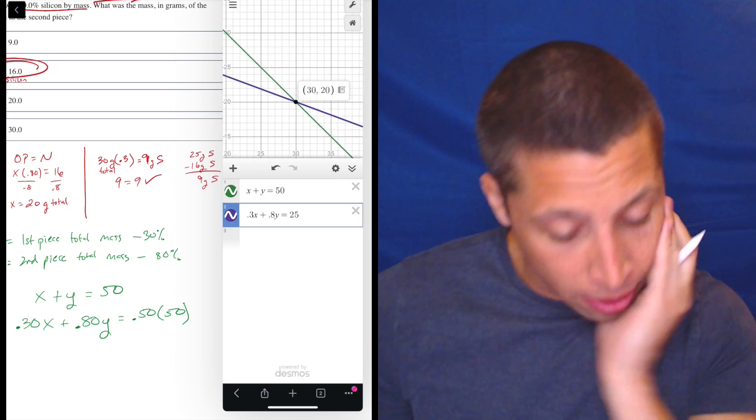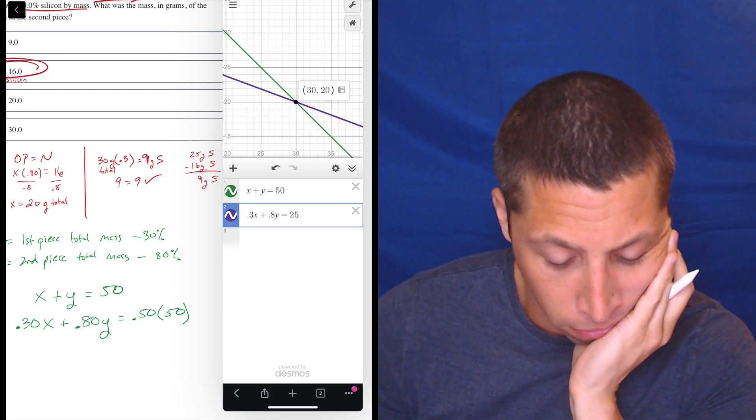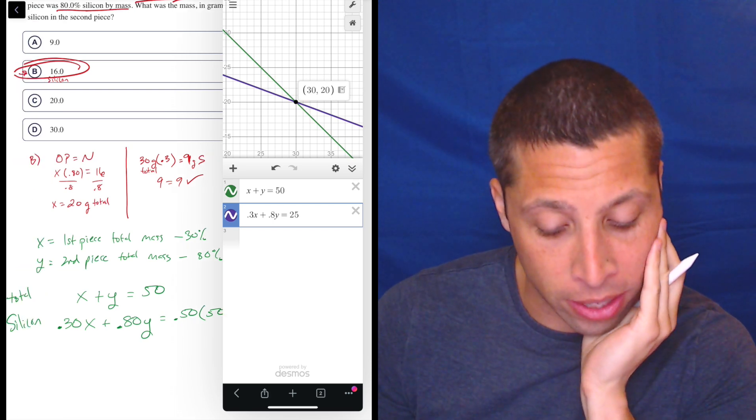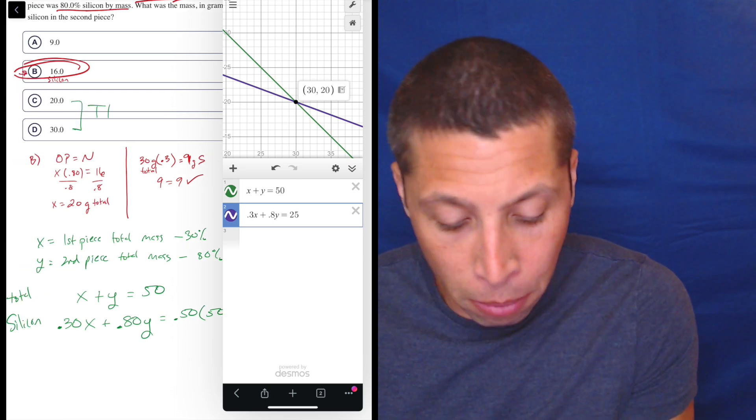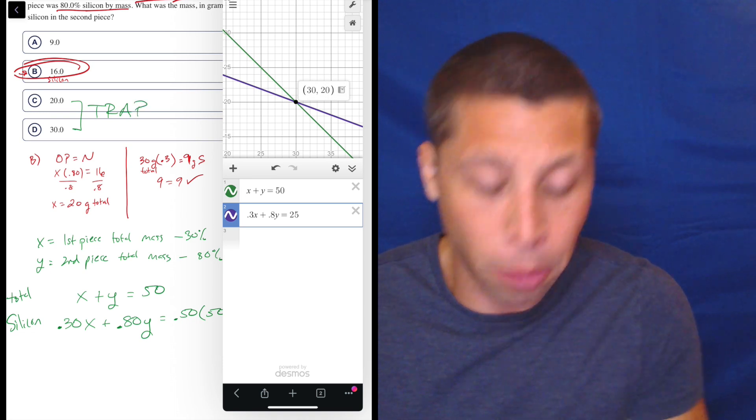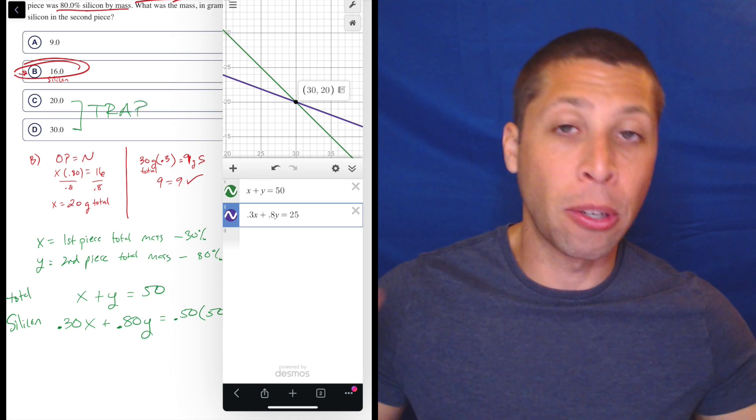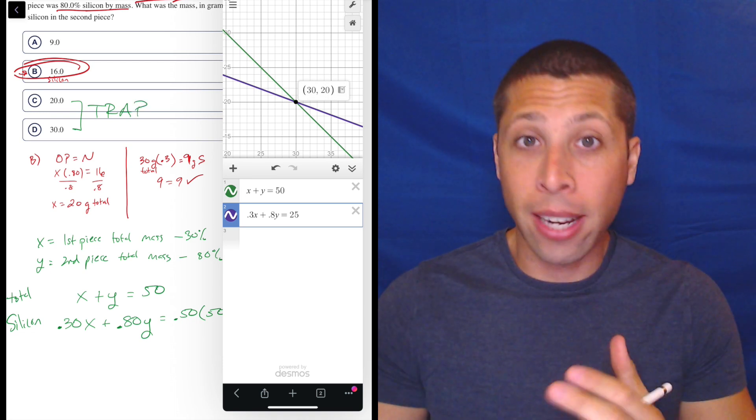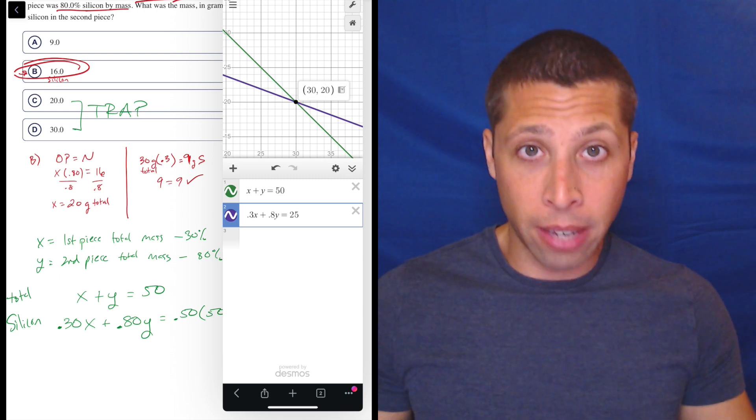And the intersection point is 30, 20. Now look at your answer choices for a sec. 30, 20, both of those are answers. And here's the other problem with the algebra is we get in this mission accomplished kind of mode where if we get x equals, if we get y equals, we're done. That's it.